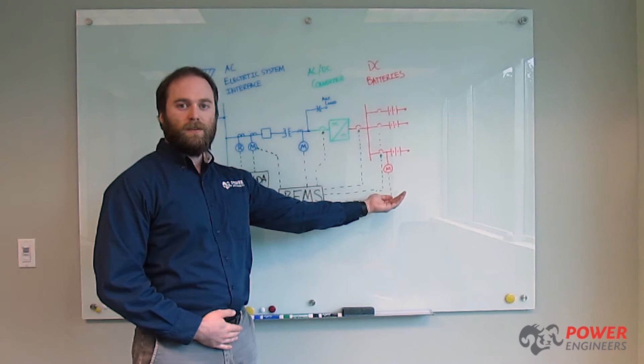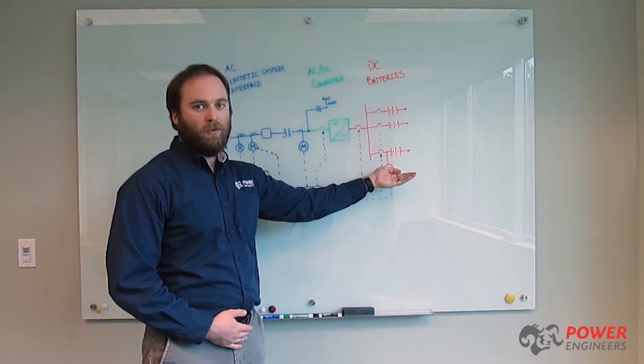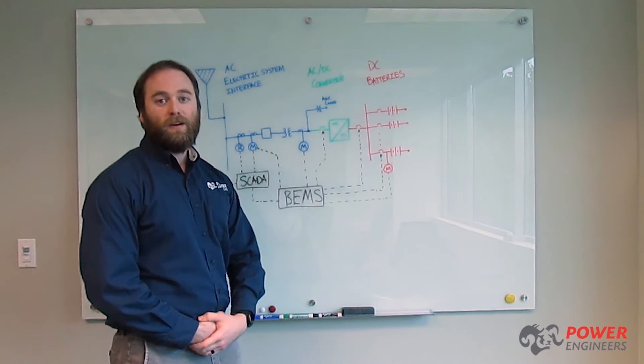Starting on the right hand side, we can see an assemblage of DC batteries. Individual DC cells are connected in series and then into parallel arrays in order to achieve a total desired BESS output.